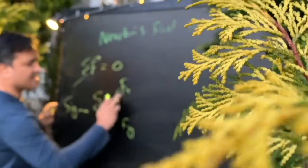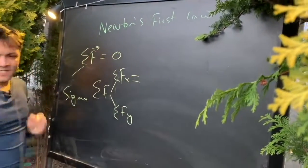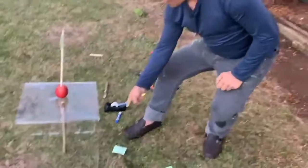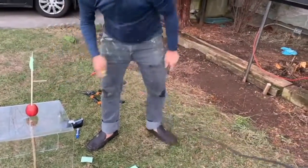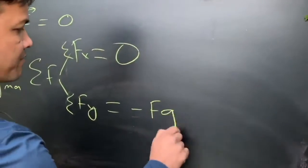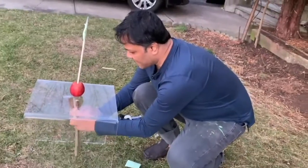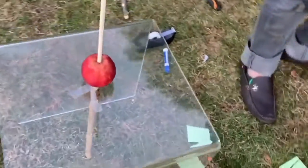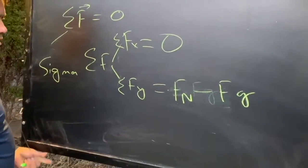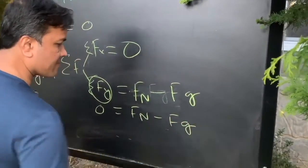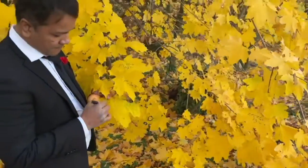We look at Sigma Fx and Sigma Fy. How many forces are acting in the x direction? There are no forces acting at the x direction, so Sigma Fx equals zero. How many forces are acting at the y direction? I see the normal force Fn, which is always positive, and the gravitational force Fg acting downward. The apple is not moving at the y direction, so it equals Fn minus Fg equals zero, therefore Fg equals Fn.